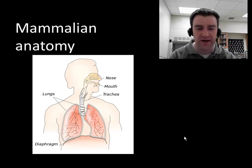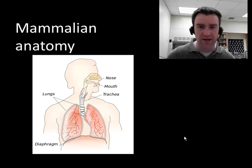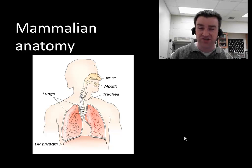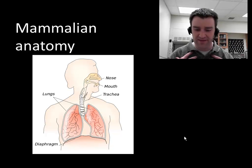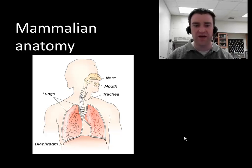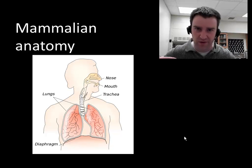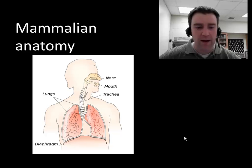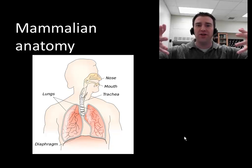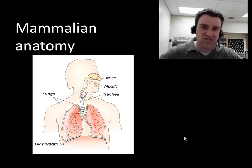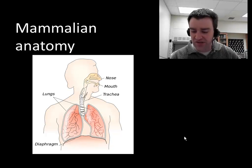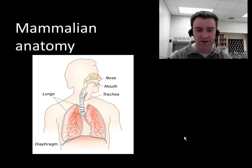Now let's switch to mammals and think about how we get fresh air down to our exchange surfaces. The place where oxygen actually crosses into our blood is deep inside our lungs — which prevents a lot of water loss. To keep those surfaces wet, the only way water can escape is through our nose and mouth. But if we don't have a way of constantly pulling fresh air down to that area, there won't be much oxygen left to enter the blood.